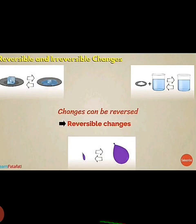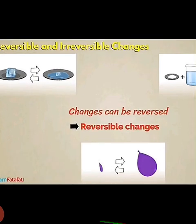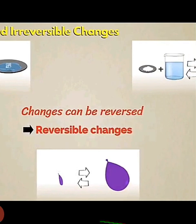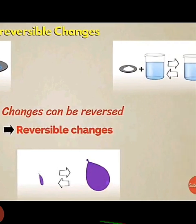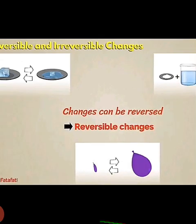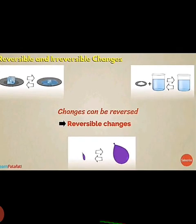Here you will see examples. There is a plate with a double arrow showing ice from water and water from ice. Next example: salt dissolved in water gives a clear solution, also shown with a double arrow. Third example: blowing of air in a balloon, also with a double arrow. This means that these changes can go both ways — water can become ice and ice can become water.